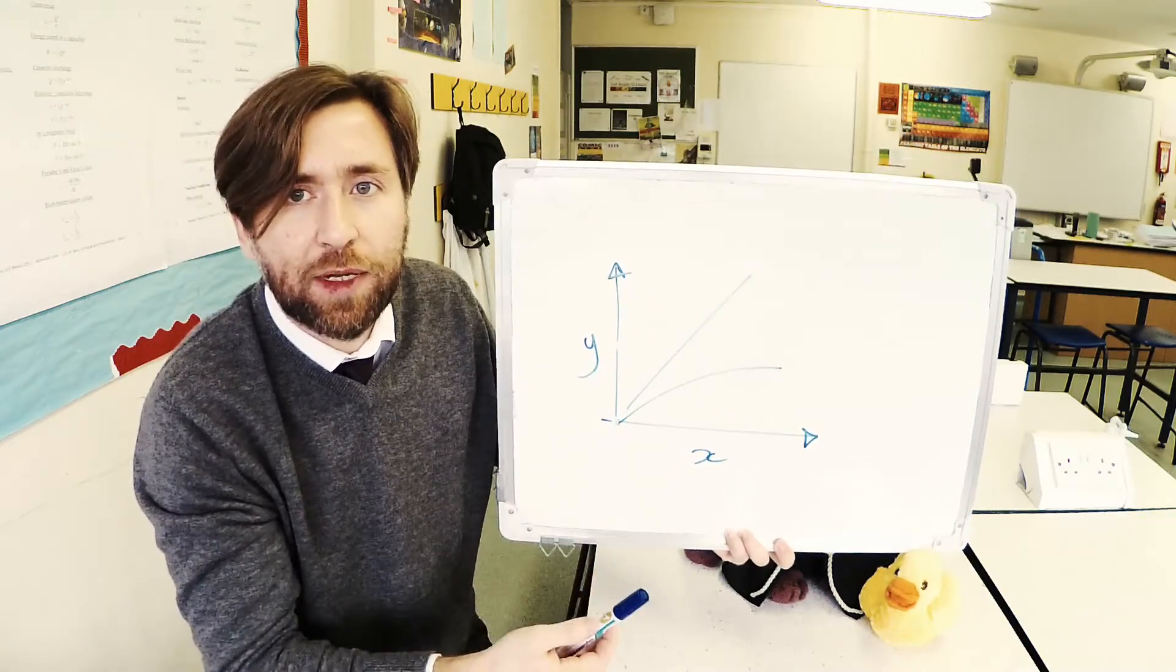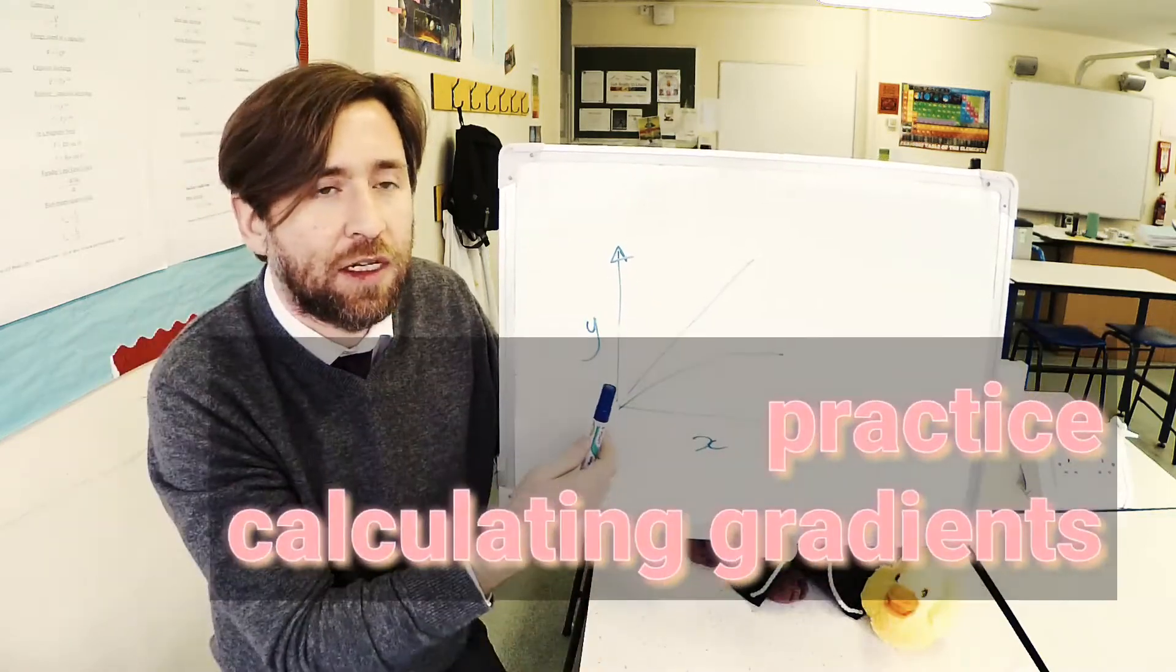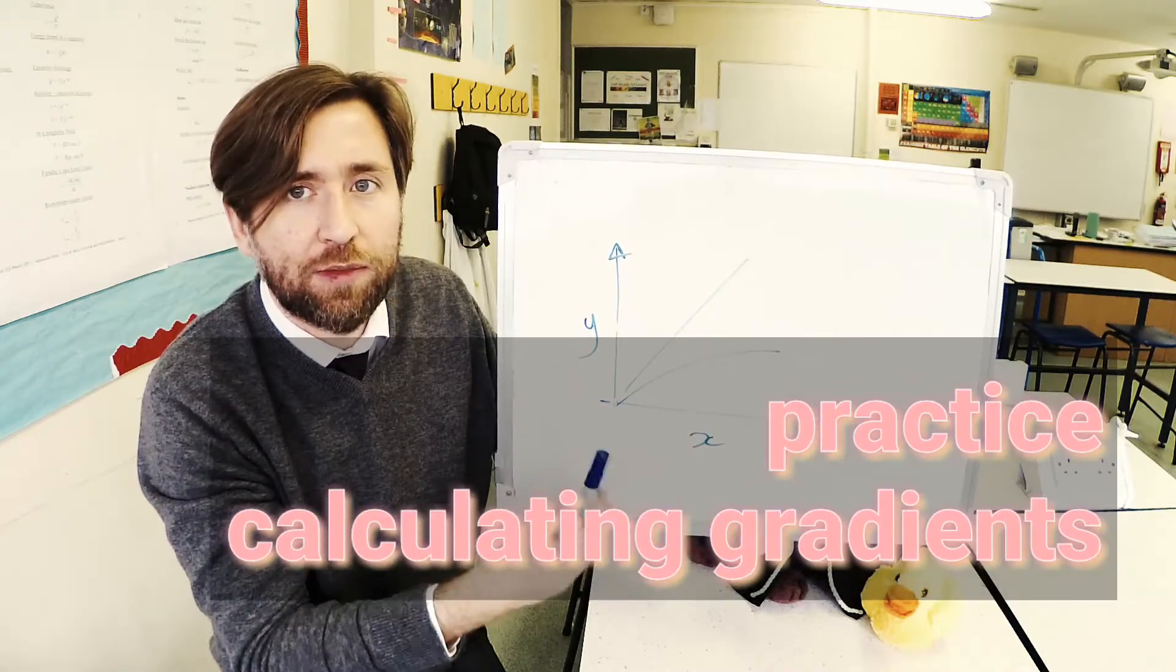But the gradient can have a number. So expressing that gradient as a number, the rise over the run, is a really important thing.